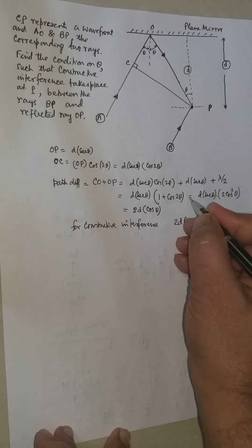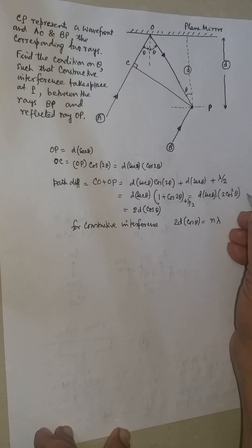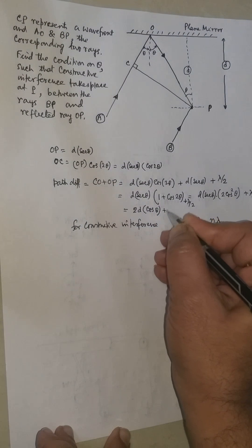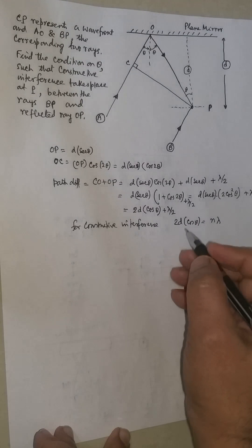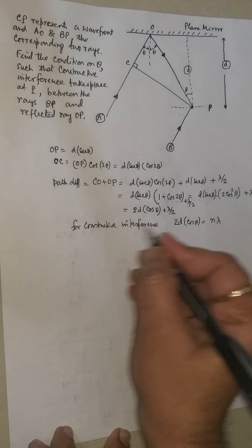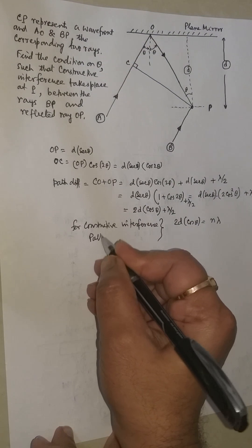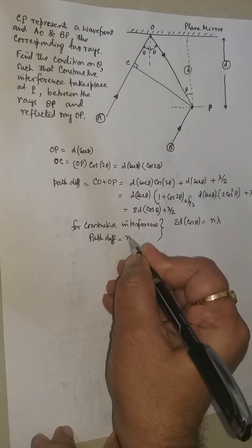So once we add lambda by 2 here, the path difference comes out to be this. When this quantity, for constructive interference, the path difference should be equal to N lambda.